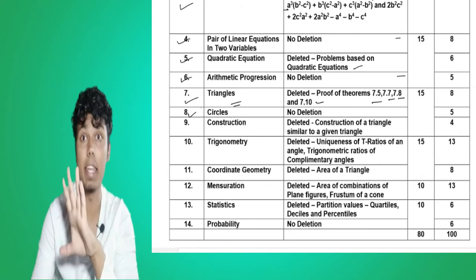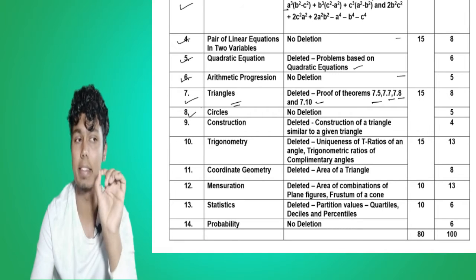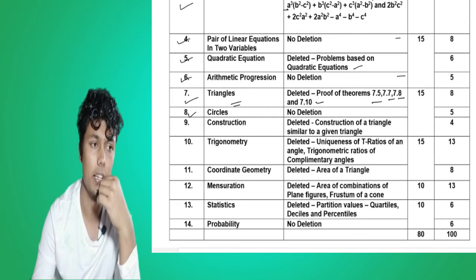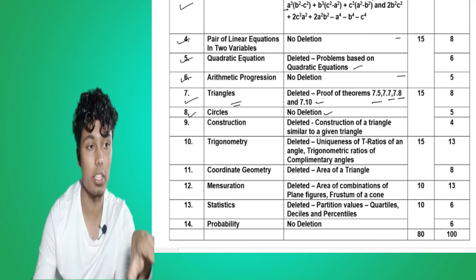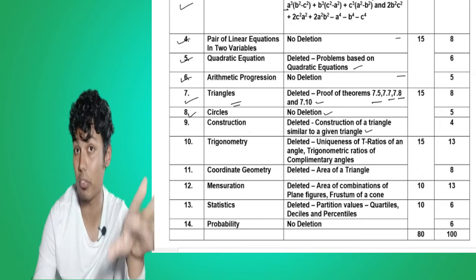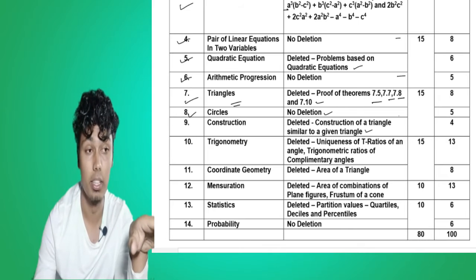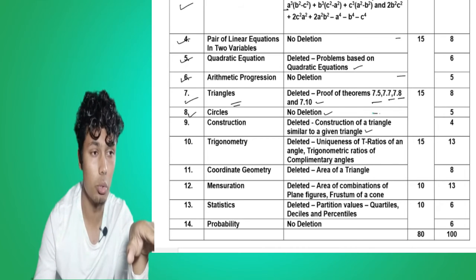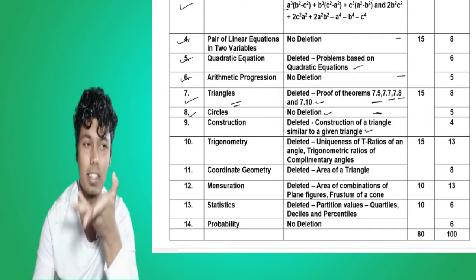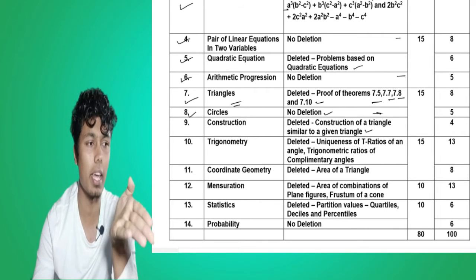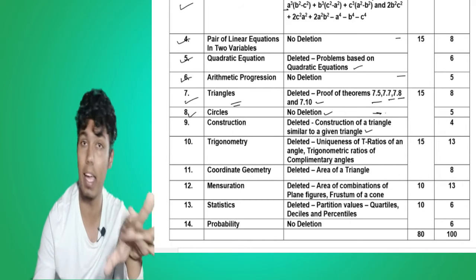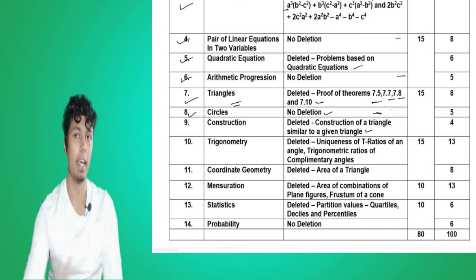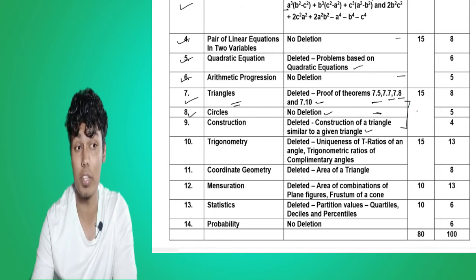Chapter number eight is Circles — from this chapter there is no deletion, nothing is deleted. Chapter number nine has construction of a triangle, and that construction is deleted from this chapter. So there is no deletion from Circles — actually only one exercise is there in Circles, so it's not that big a deal. In chapter seven some theorems are deleted, and in chapter nine construction of a triangle is deleted.